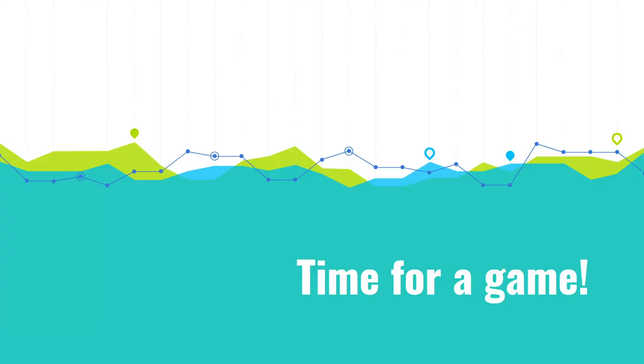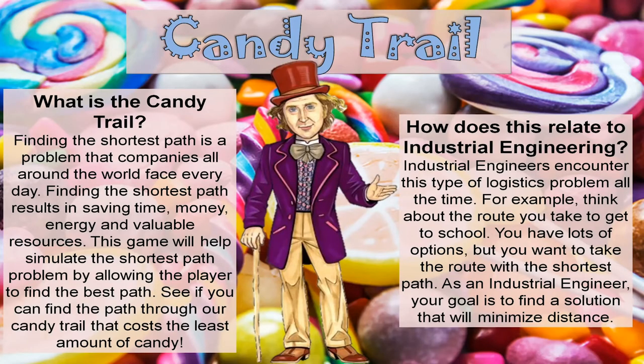It is time for a game. We will be demonstrating the candy trail, which is composed of a network of different paths that have different costs associated with them. Each participant will have 25 pieces of candy and will try to choose the optimal path to the finish line so they can retain as much candy as possible. This is industrial engineering — engineers encounter these problems all the time, especially in logistics, where you want to find the cheapest or shortest route to save money and time.